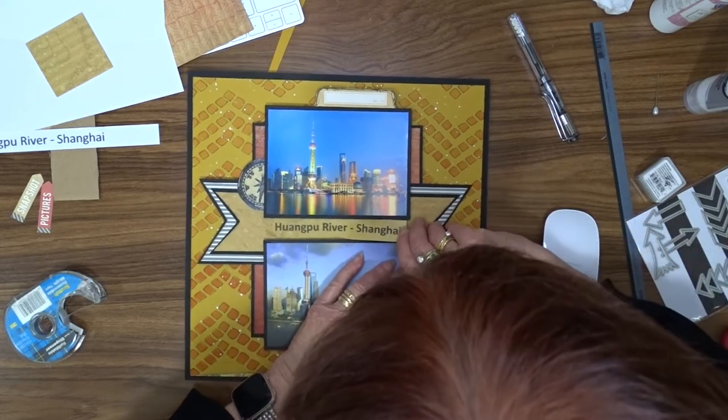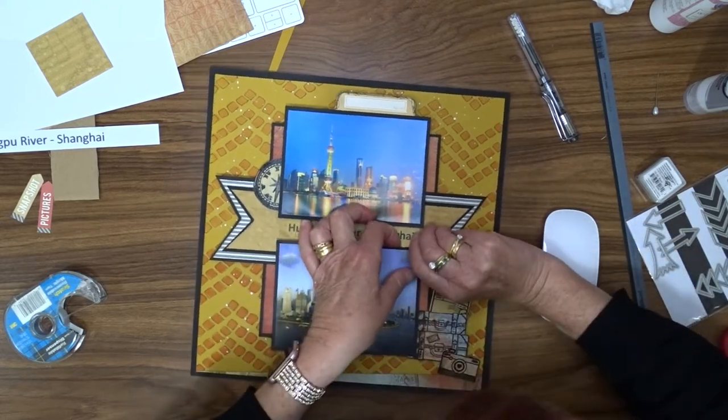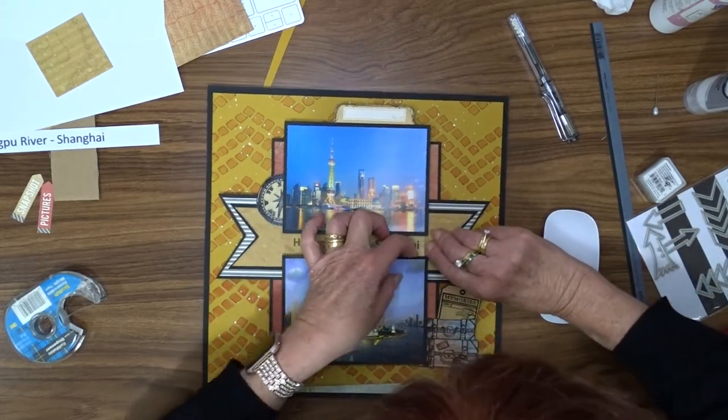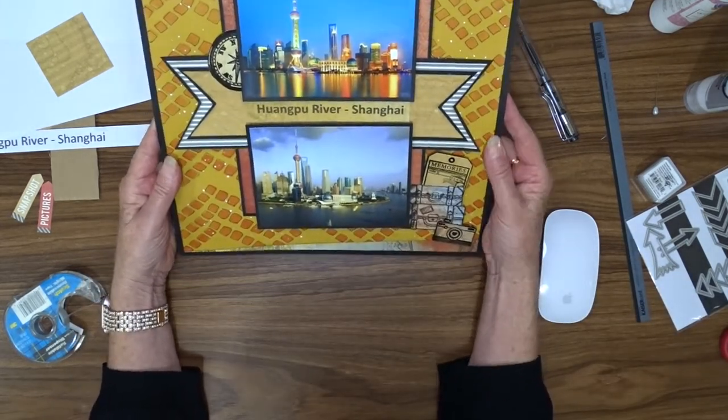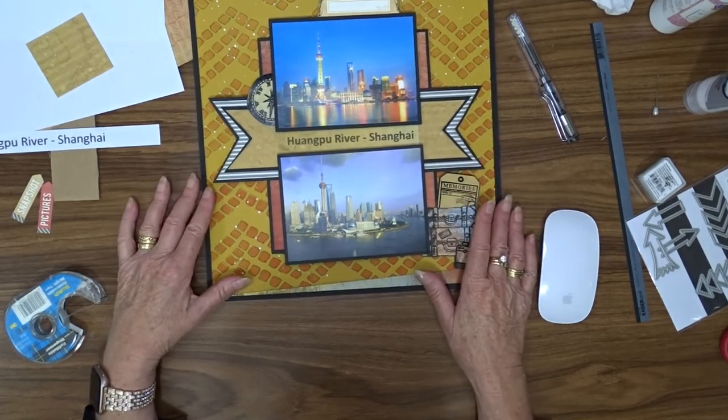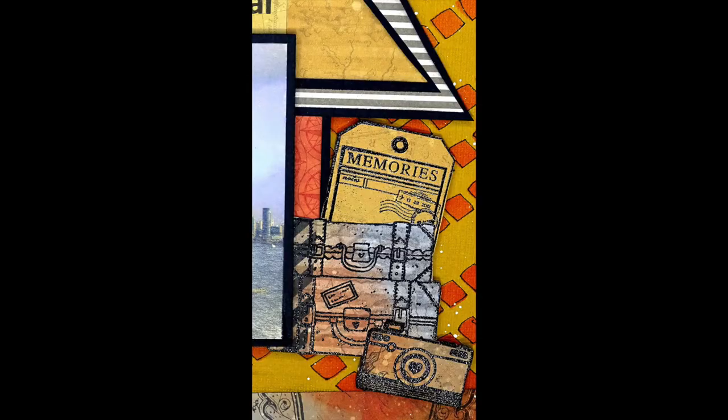So that's my layout for today. I hope you've enjoyed watching my video. And don't forget, this is for the March challenge over at Off The Rail Scrapbooking, and I will put a link in the description box below to their Facebook page where the challenge is held.